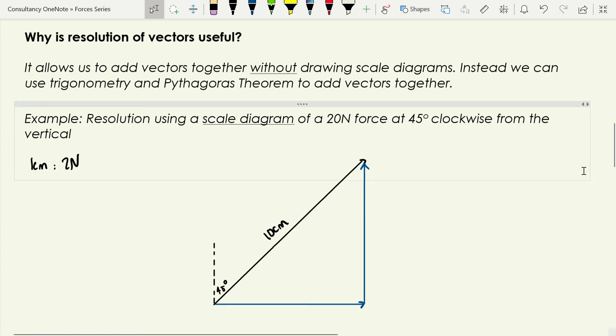So we can do resolving in two ways. We can do it using a scale diagram like we did with the vector addition, which I'm going to show you first of all. But the usual way we do it is by using trigonometry, but I'm going to show you both methods here. So what we're going to do is we are going to resolve a 20 Newton force at 45 degrees clockwise from the vertical. And we're going to resolve it into horizontal and vertical components.